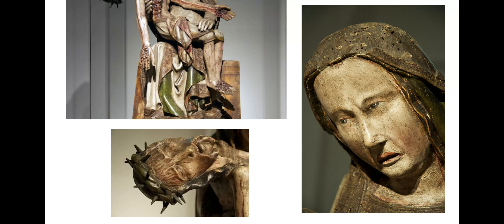The function of this piece is definitely religious — used in prayer and meditation, and perhaps religious ritual as well. For formal qualities, you could use color: color helps convey the narrative of his death and the gruesome nature of his suffering through the red of the blood. But also the texture of the wood — that raw texture helps convey the raw sense of emotion and the anguish on both of their bodies, but especially the Virgin Mary's face. So that's it for the Rottgen Pieta.